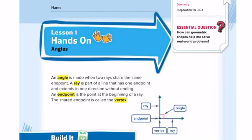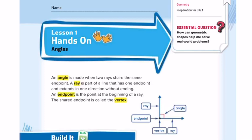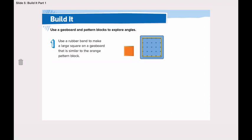Our third vocabulary word is the endpoint. What is an endpoint? An endpoint is the point at the beginning of a ray. A ray has one endpoint and it goes without ending. The vertex is the shared endpoint. Here we have two rays — both of them are sharing this endpoint, so we call this endpoint the vertex, because it's a shared endpoint.